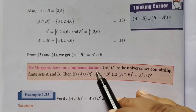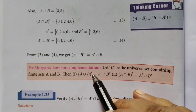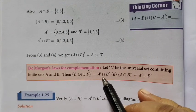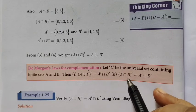This is A dash. A union B whole dash equal to A dash intersection B dash. Union is intersection. Similarly, intersection is intersection.